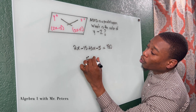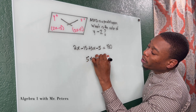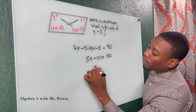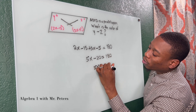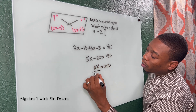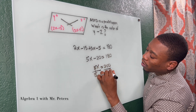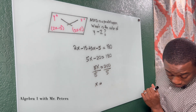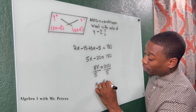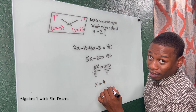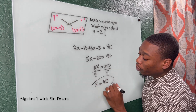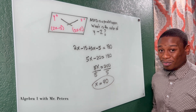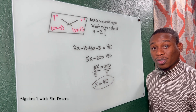So we have 2X minus 15 plus 3X minus 5 is equal to 180, since consecutive angles measure to 180. We simplify and get 5X minus 20 equals 180, then 5X equals 200, so X equals 40. Remember that is not the final angle measure — that's just what X equals, so we have to plug it back in.